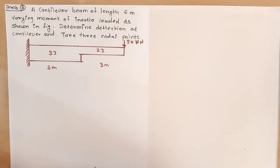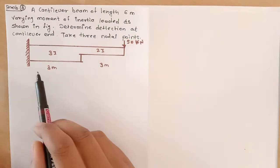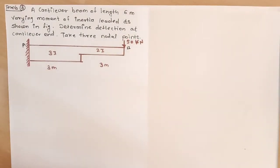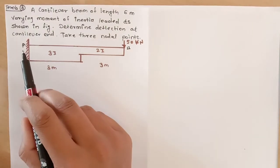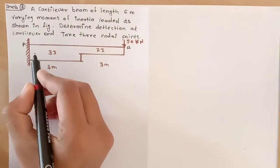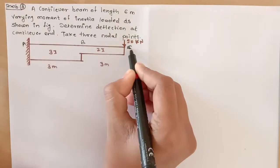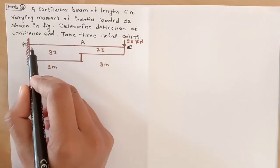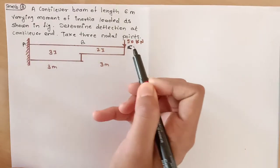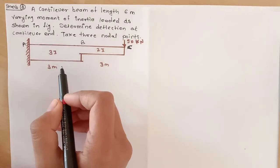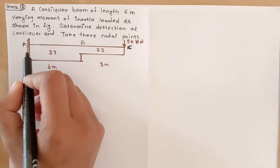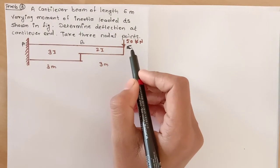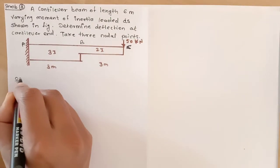Let us see our third problem on the finite difference method. The problem statement is: a cantilever beam of length 6 meters, from point A to point B, with varying moment of inertia, loaded as shown in the figure. Determine the deflection at the cantilever end. Take 3 nodal points. Consider beam A-B-C where A is the cantilever support. The A-to-B span is 3 meters and the B-to-C span is 3 meters. At point C, a 50 kN point load is applied.